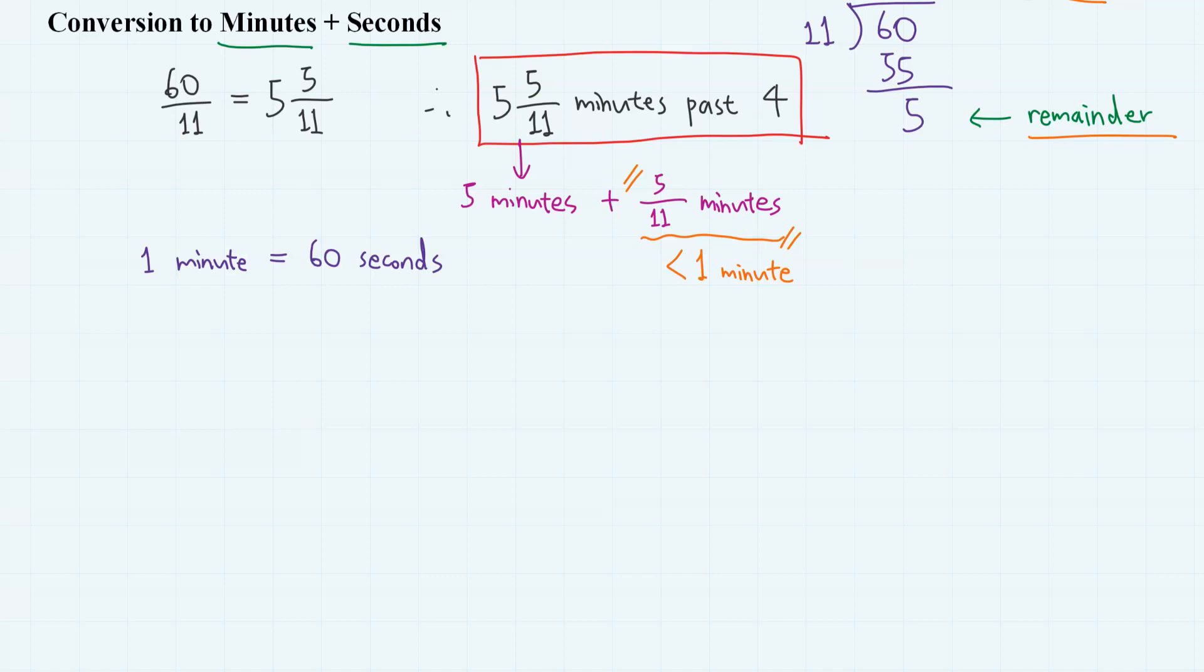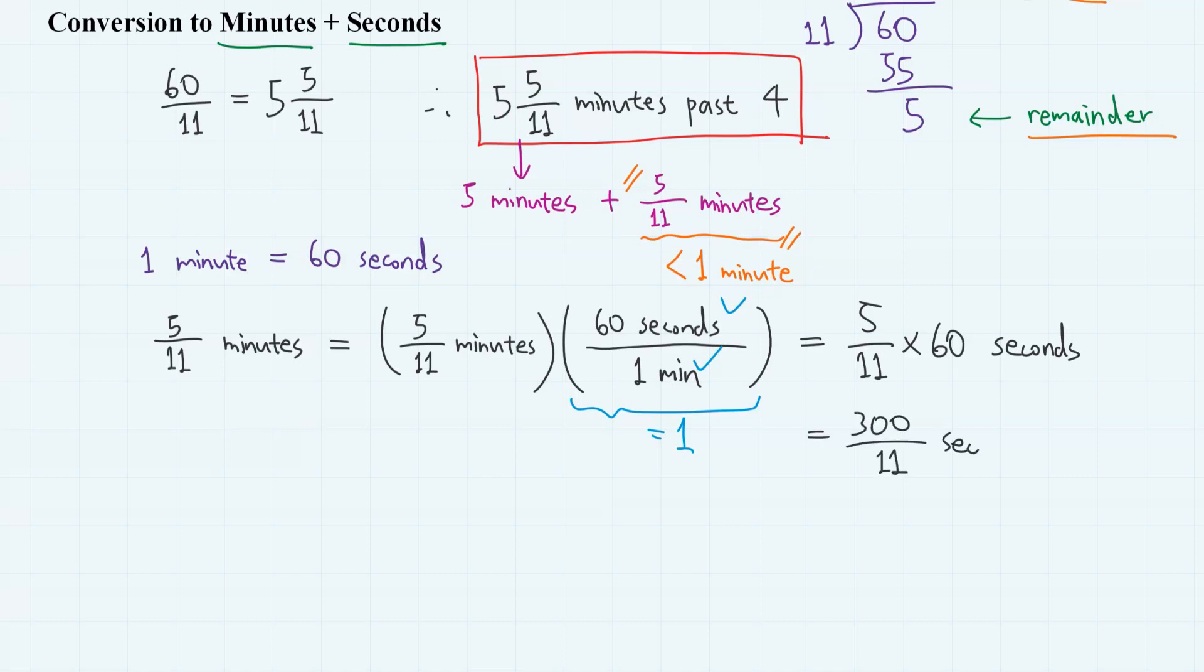Using 1 minute equals 60 seconds, we simply have to multiply 60 seconds divided by 1 minute. Since these two are the same, this entire thing can be considered as unity if you take units into account as well. Or perhaps the easier instruction for most people is just multiply 60 to the number part, then you will obtain a number in seconds. So in the end, we have 300 divided by 11 seconds. So it is 5 minutes 300 over 11 seconds past 4.